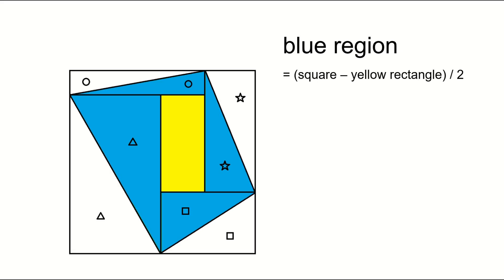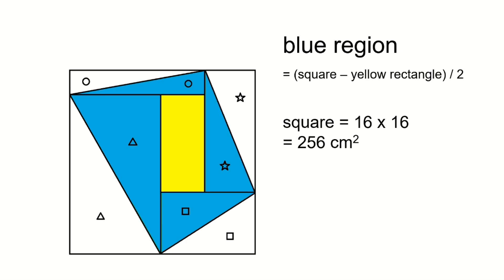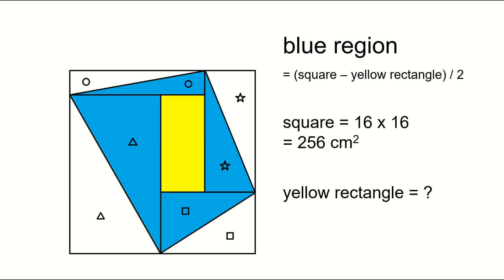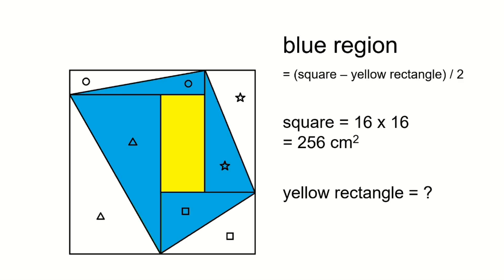The area of the square is 16 times 16, which equals 256 square centimeters. If we know the area of the yellow rectangle, we can find the area of the blue region. What is the area of the yellow rectangle?